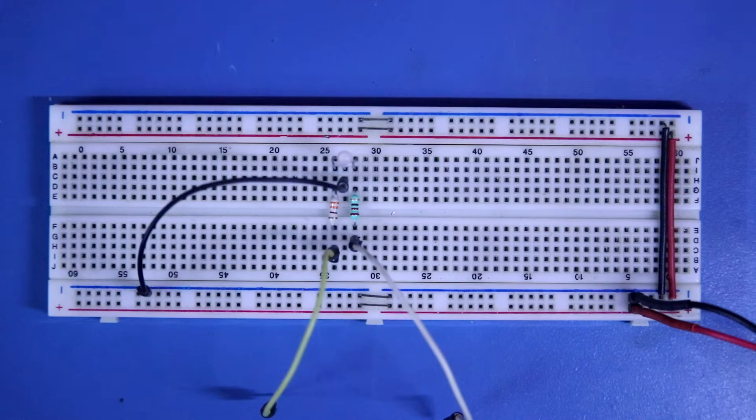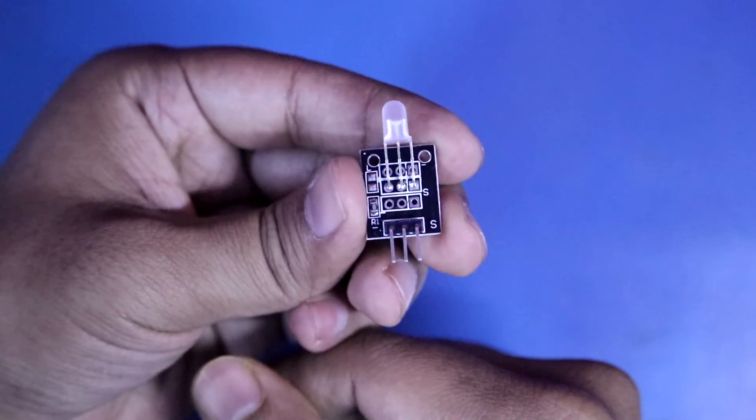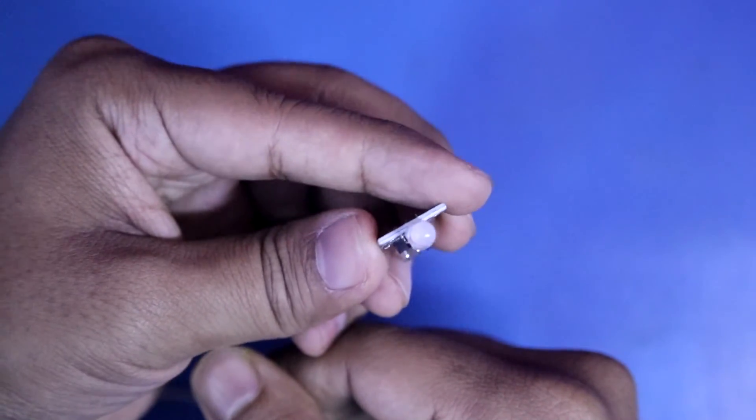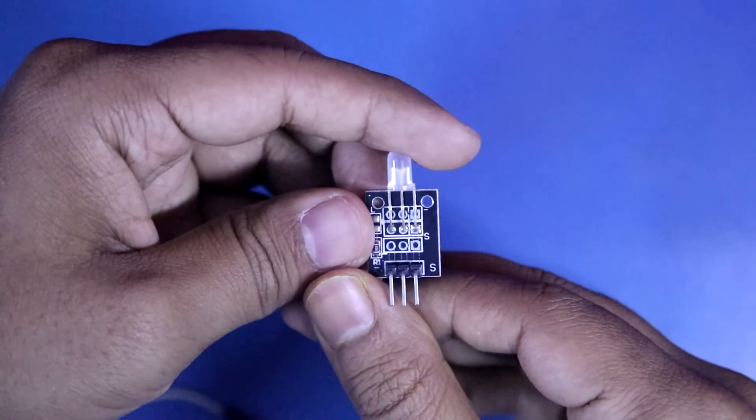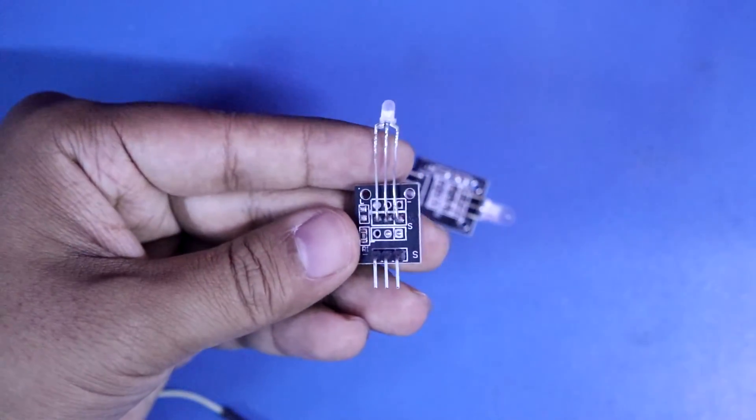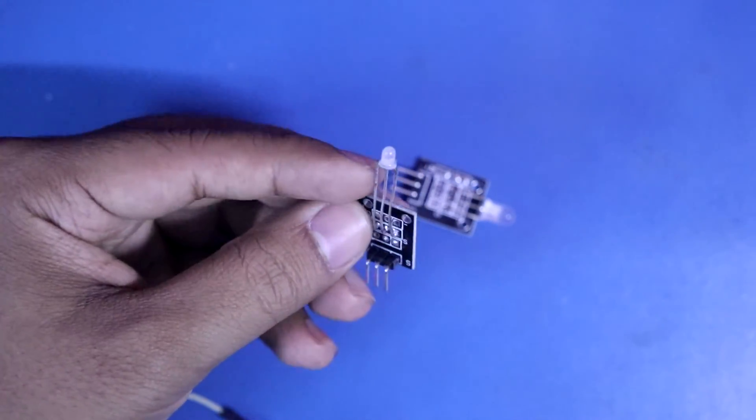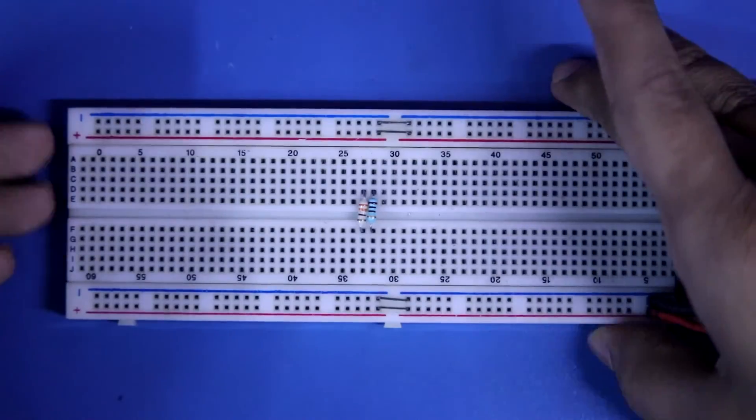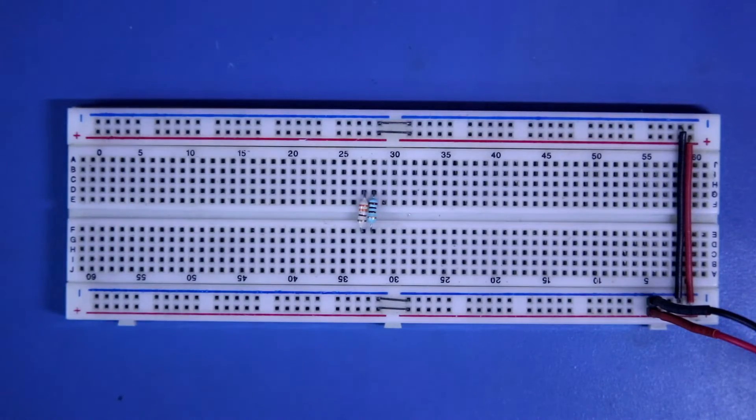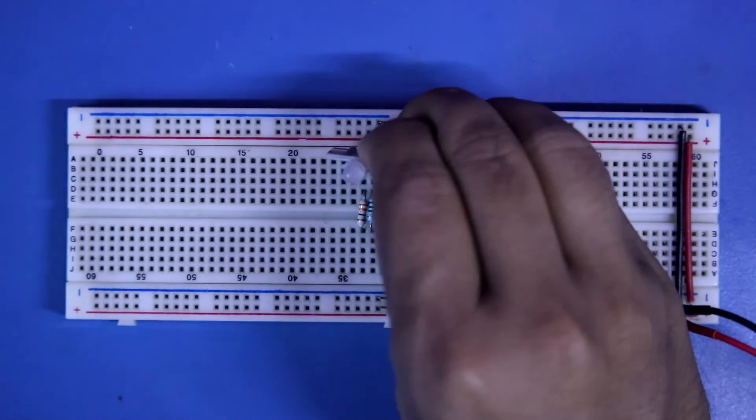So, this is all about KY029. Now, talking about KY011. This is also two color LED. But it is 5 mm. This is 029, it is 3 mm LED. But it is 5 mm. The working principle is exactly same as KY029.